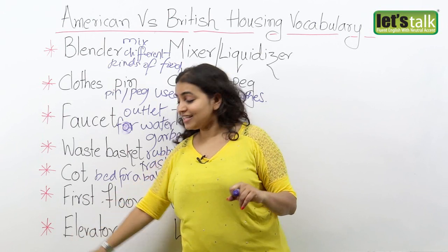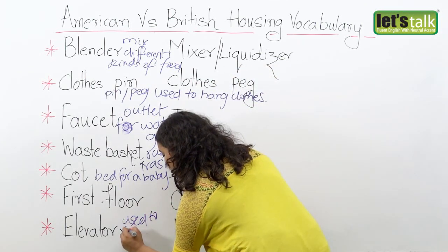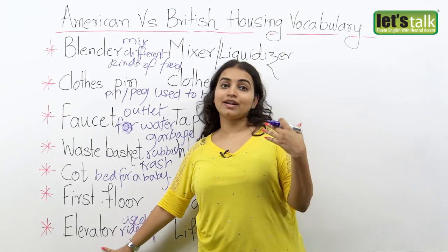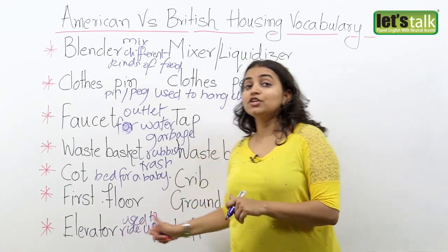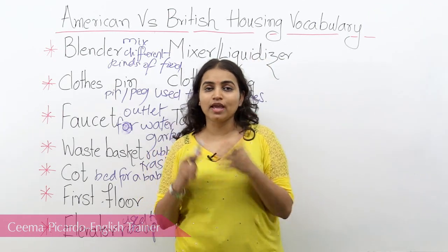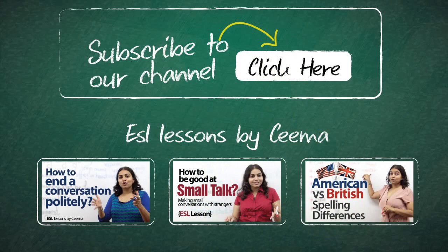Our next expression is elevator, as opposed to a lift in the UK. If you are trying to ride up two or three levels of floors instead of taking the stairs, in the US you will use an elevator, but in the UK you will use a lift. Well, that's it from this lesson on American versus British English housing vocabulary. I hope you found it very interesting. Thank you very much for watching and take very good care of yourself.